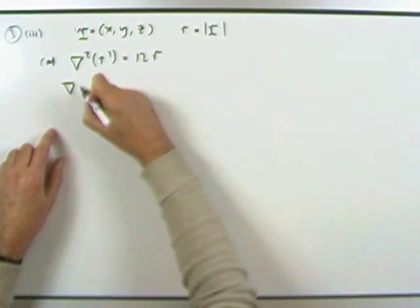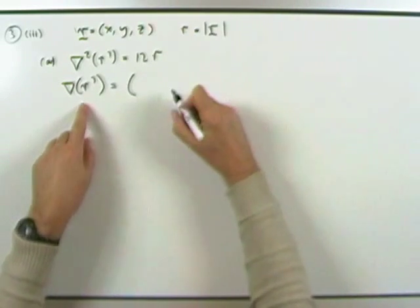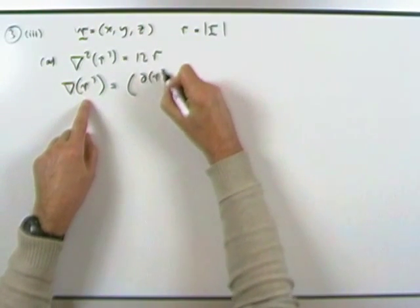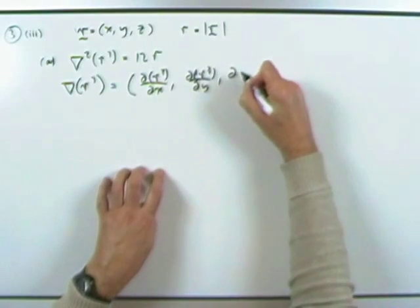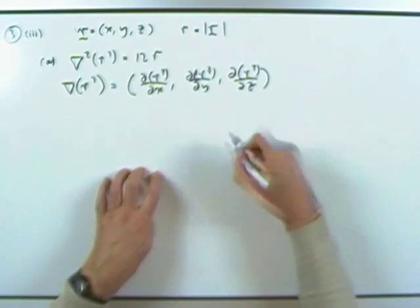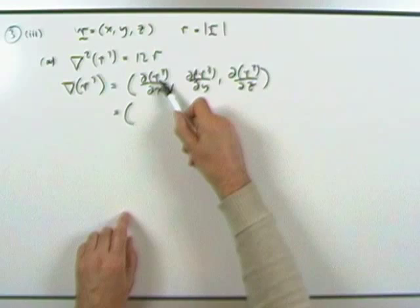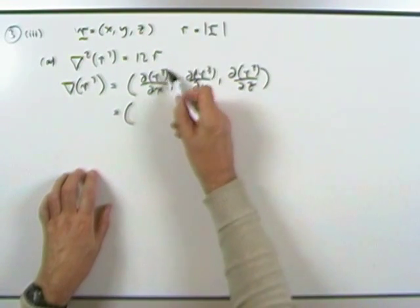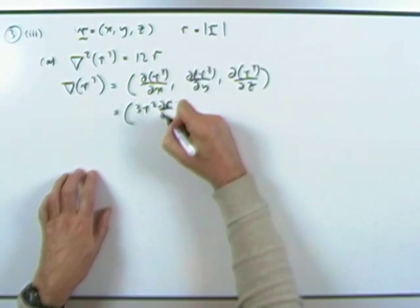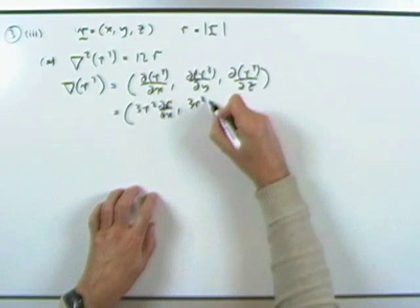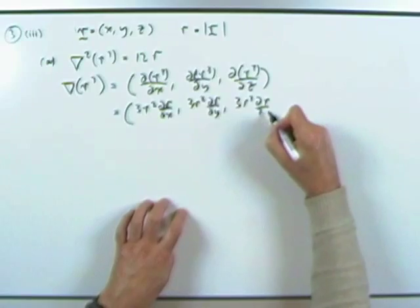First, grad of R³ produces a vector with components: ∂(R³)/∂x, ∂(R³)/∂y, ∂(R³)/∂z. Each component differentiates by chain rule: ∂(R³)/∂x = 3R² · (∂R/∂x). Similarly 3R² · (∂R/∂y) and 3R² · (∂R/∂z).